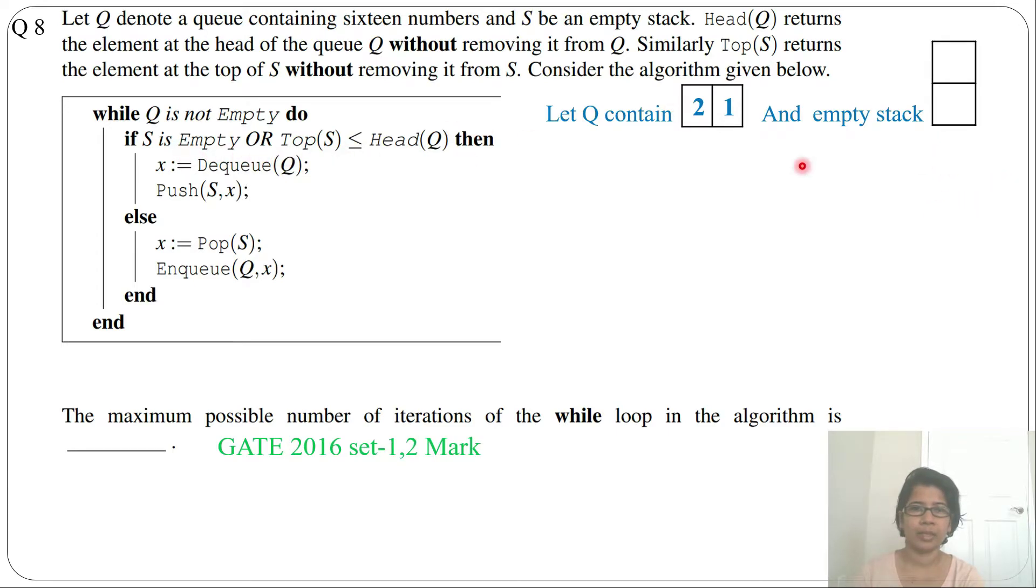So if S is empty or top of S less than head of Q - so here S is empty, so the first condition satisfies. Next, X equals dequeue(Q). So we will just dequeue, and dequeue is always from front and enqueue is always from rear. So we will dequeue 2 and push into the stack. So in while 1 we will dequeue 2 and push into the stack.